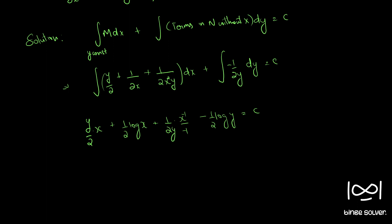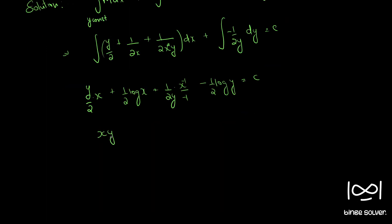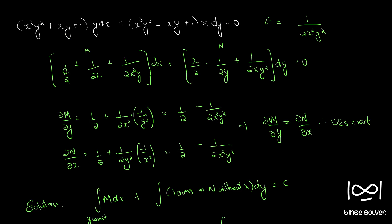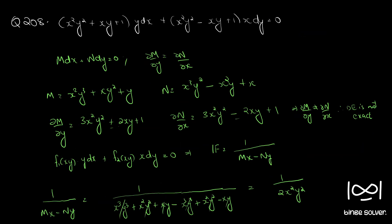Multiplying throughout by 2 gives: xy − 1/(xy) + log(x/y) + log(x/y) = c, which simplifies to xy − 1/(xy) + log(x/y) = c. The integrating factor is 1/(2x²y²) and this is the final solution to question number 208.